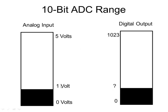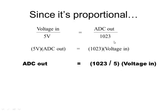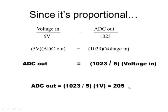Now that should make sense, because if you think about this: 1 volt out of 5 is one fifth. What's one fifth of — let's just round to 1,000 — one fifth of 1,000 is 200. So one fifth of a little more than 1,000 is going to be a little more than 200, and that's what we've got: 205. It's always a good idea to do a sanity check — does that number actually make sense? Is it about one fifth, or whatever the fraction is?